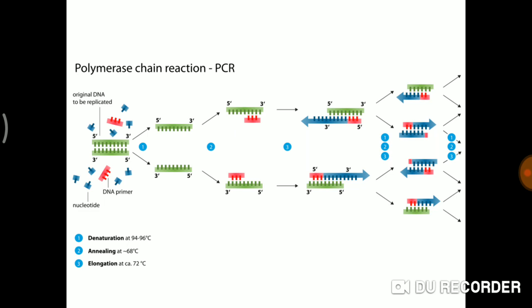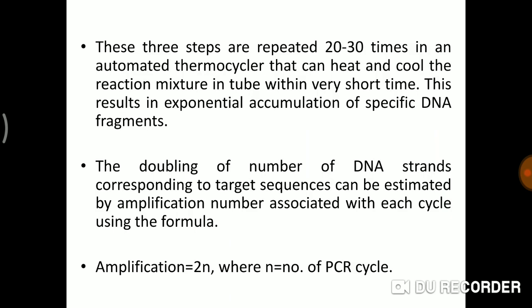After step three, from one piece we get two pieces, and from two we again get more — and likewise this continues. This is the diagram of PCR. These three steps are repeated for multiple cycles, depending on how many cycles you run. The machine that does this is called a thermocycler, which can heat and cool the reaction mixture in a tube within a very short time in an automated manner.